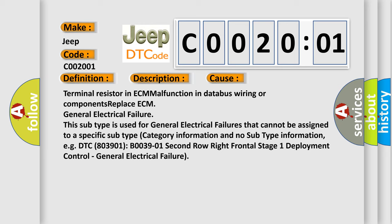This subtype is used for general electrical failures that cannot be assigned to a specific subtype category with no subtype information. For example, DTC B003901: second row right frontal stage 1 deployment control, general electrical failure.